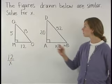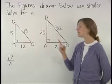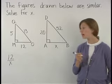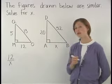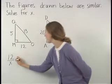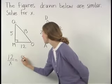Next, notice that the sides QM and DA are corresponding sides, so we have the ratio 5 over 20, so 12 over X will be equal to 5 over 20.